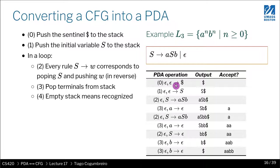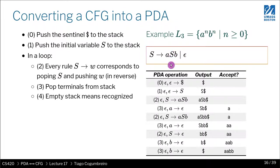Let's trace execution step by step. Step zero: push dollar sign — the stack now has a dollar sign. Then we push S, the initial variable. Now we have S on top of the stack. Non-deterministically we choose to process the rule S → ASB, so we pop S and push A, S, B — rewriting the stack with the rule.